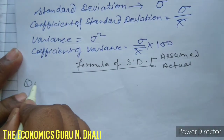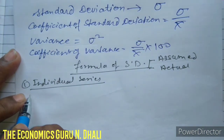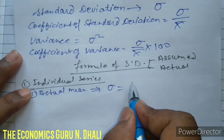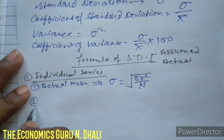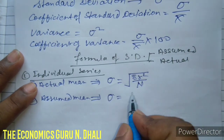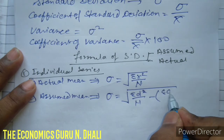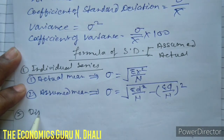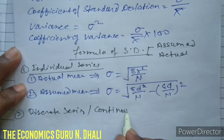The first formula applies to the individual series. We use the formula for actual mean: standard deviation equals under root of sigma x squared divided by n. The formula for assumed mean is: standard deviation equals under root of sigma d squared upon n minus bracket d upon n whole square. This formula is used for individual series. Now we discuss the discrete series and also the continuous series — both series have the same formula.